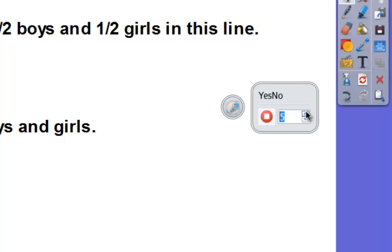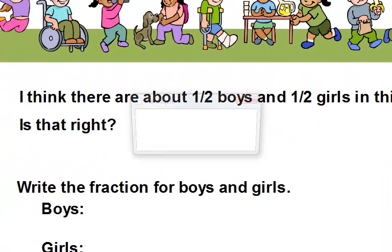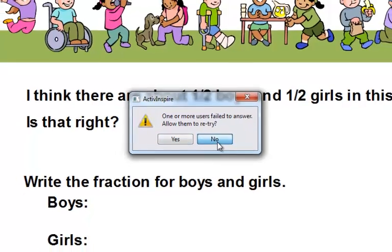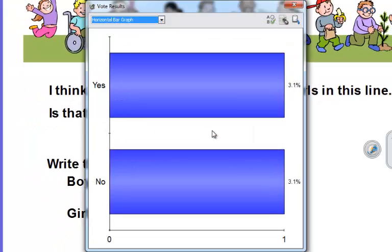I can also set a time limit and say, okay students, you have five more seconds to answer, and then it's going to automatically stop as if I hit the stop button. If not all of the devices have answered and responded, you'll get this dialog box: one or more users failed to answer, do you want to allow them to retry? If you click yes, it's going to give them a second chance to respond, but be aware that this will resend the question to all of the devices, allowing all students a second chance to re-answer the question. I'm going to click no and that's going to end the vote without getting those responses.